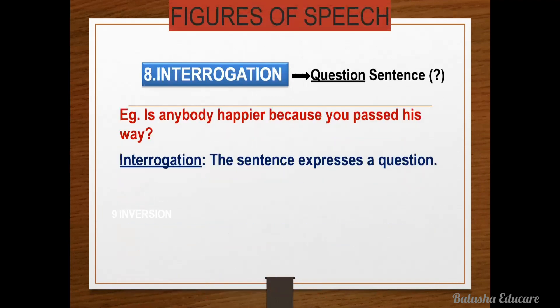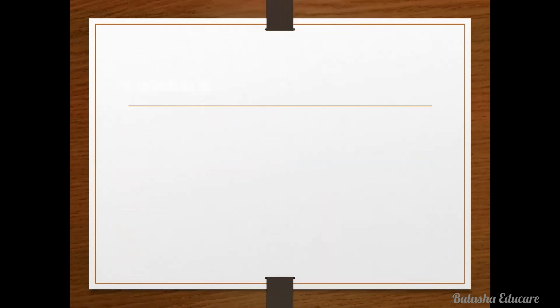The next figure of speech is interrogation. For example, in a statement itself: 'Is anybody happier because you passed his way?' — followed by a question mark. So when a statement is followed by a question mark, we say it is interrogation figure of speech. The sentence is expressed as a question. Very simple — interrogation figure of speech.